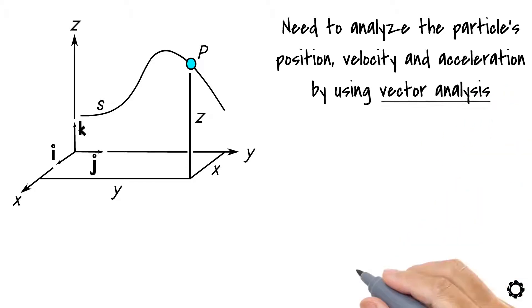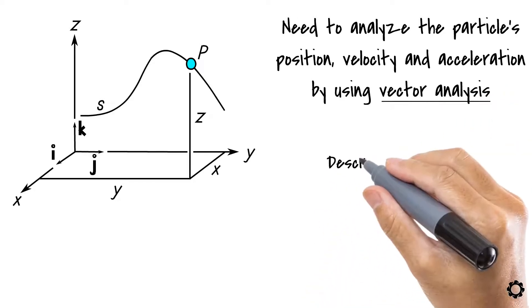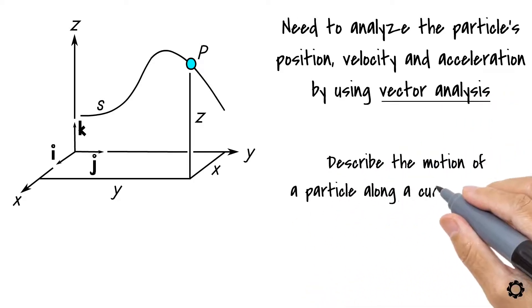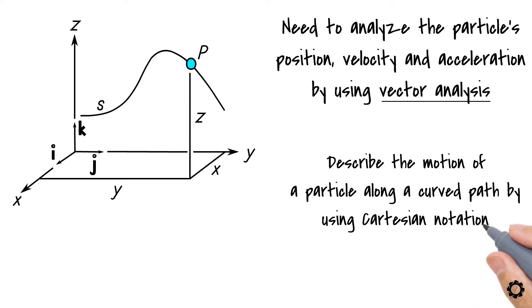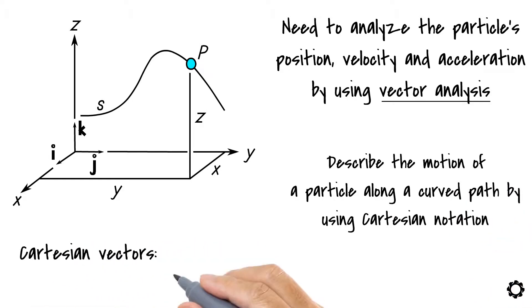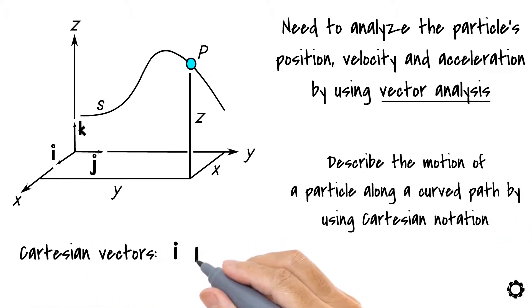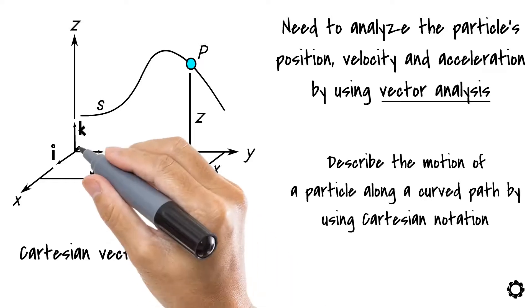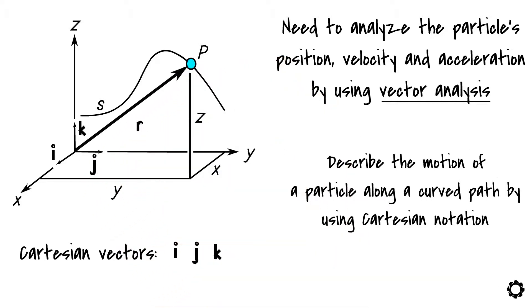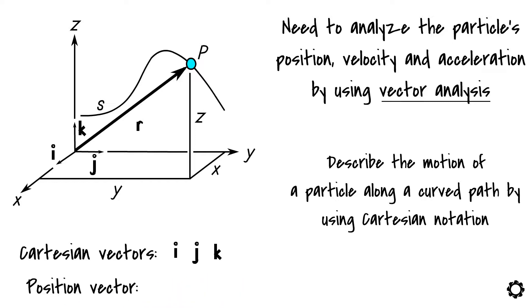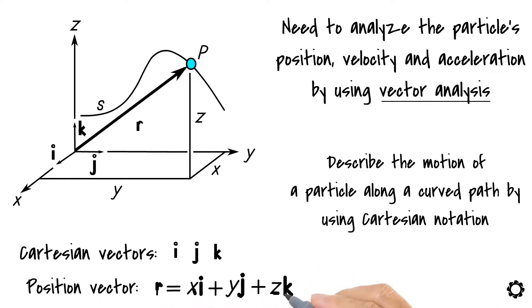In vector analysis, we can describe the motion of a particle along a curved path by using Cartesian notation, which includes the Cartesian vectors i, j, and k. For instance, we can define the location of the particle p on a curved path by using the following position vector: r equals x·i plus y·j plus z·k.